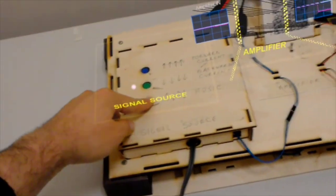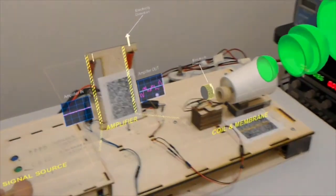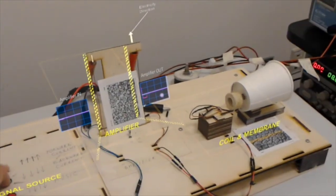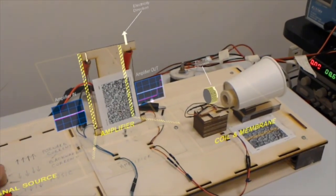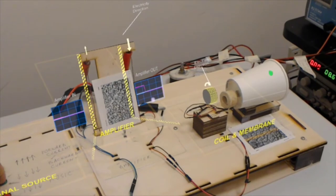We can also control what kind of information is being displayed. In this case, the magnetic fields have been disabled so that students can focus on the electricity and the forces being shown here.